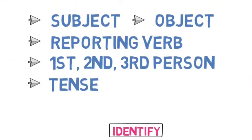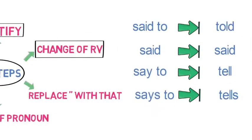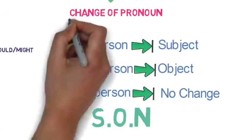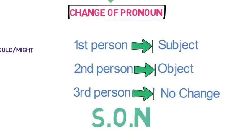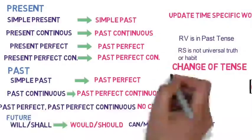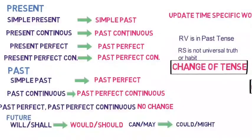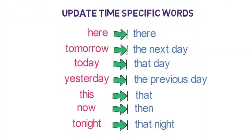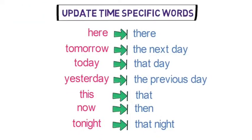This is the six-step formula to convert any direct speech to indirect speech for a statement. First, identify the subject, object, reporting verb, person, and tense in the sentence. Second, change the reporting verb as per the workflow. Third, replace inverted commas with 'that.' Fourth, change pronouns as per the workflow. Fifth, change the tense as per the workflow. And sixth, change time-related words in the reported speech as per the workflow.